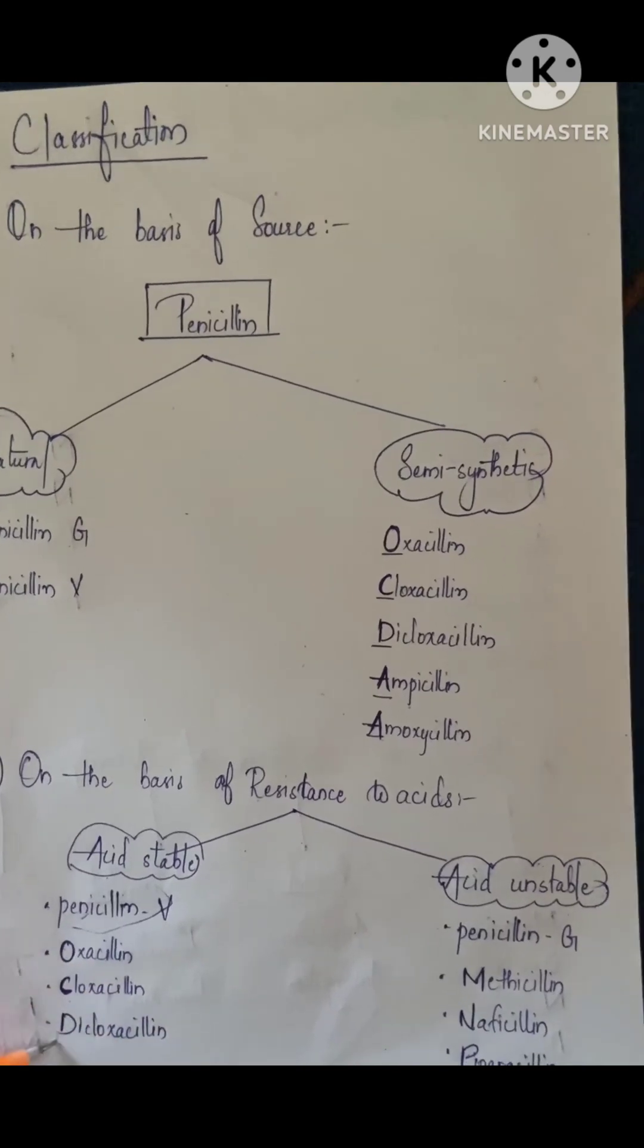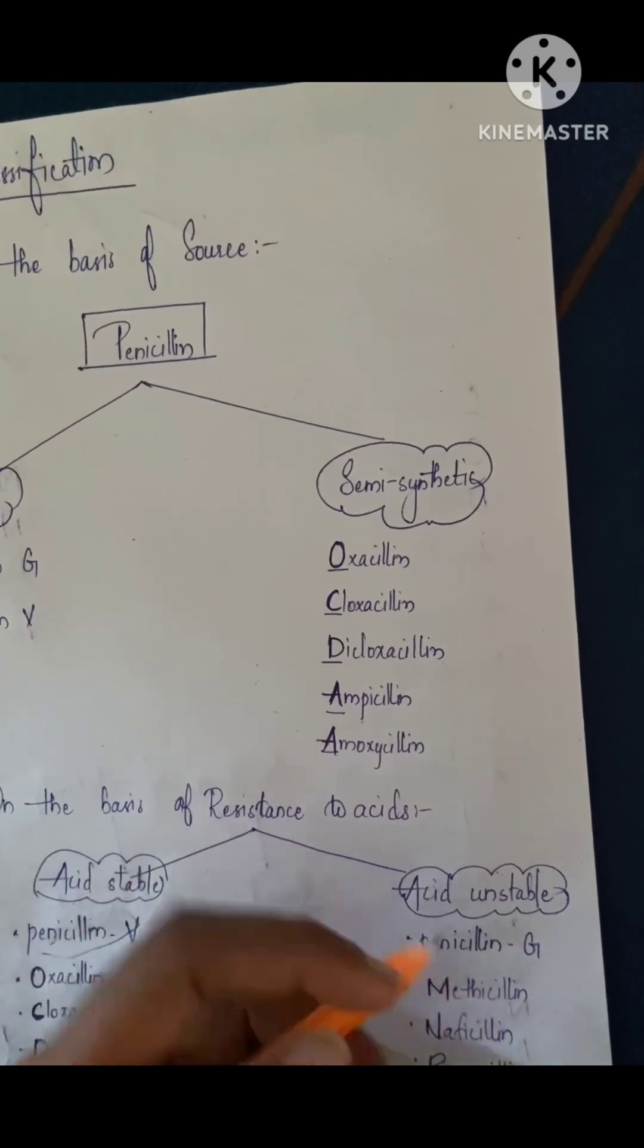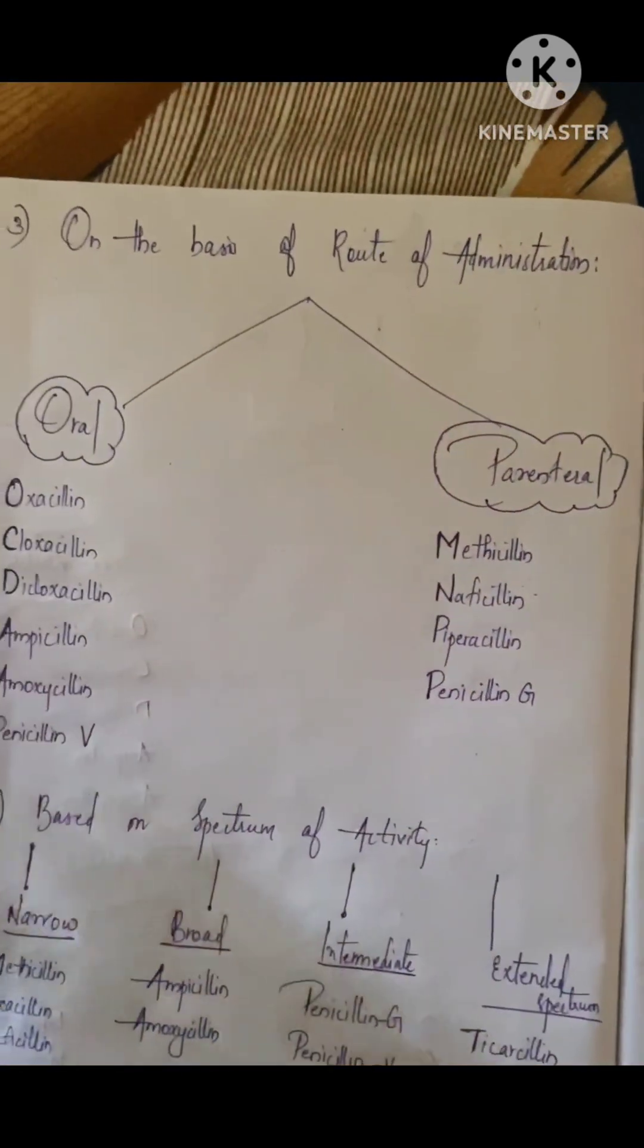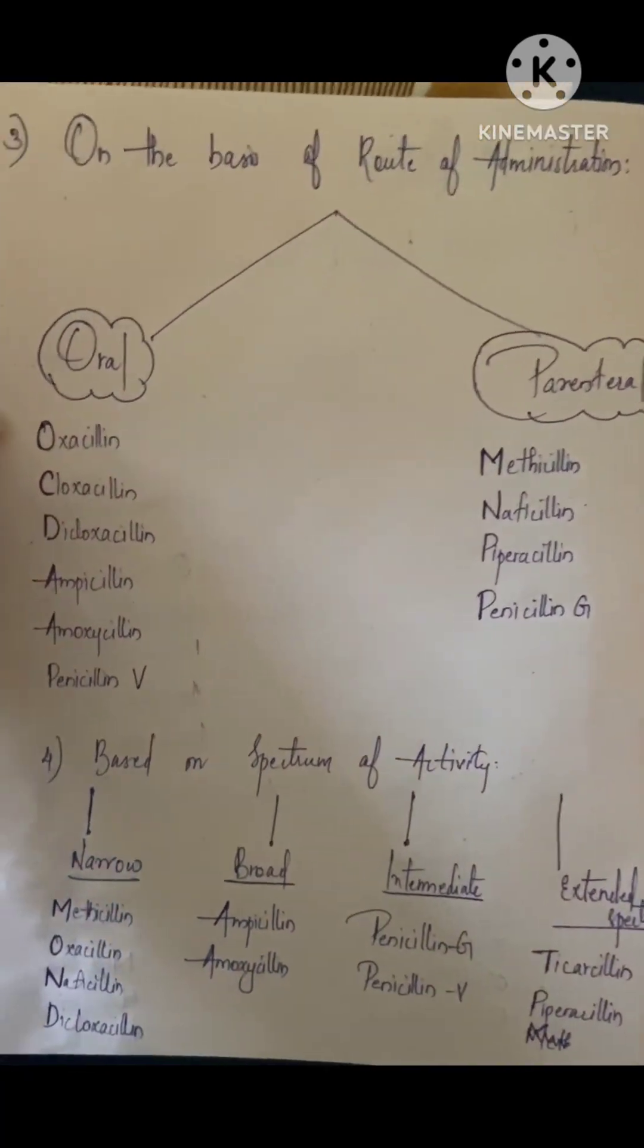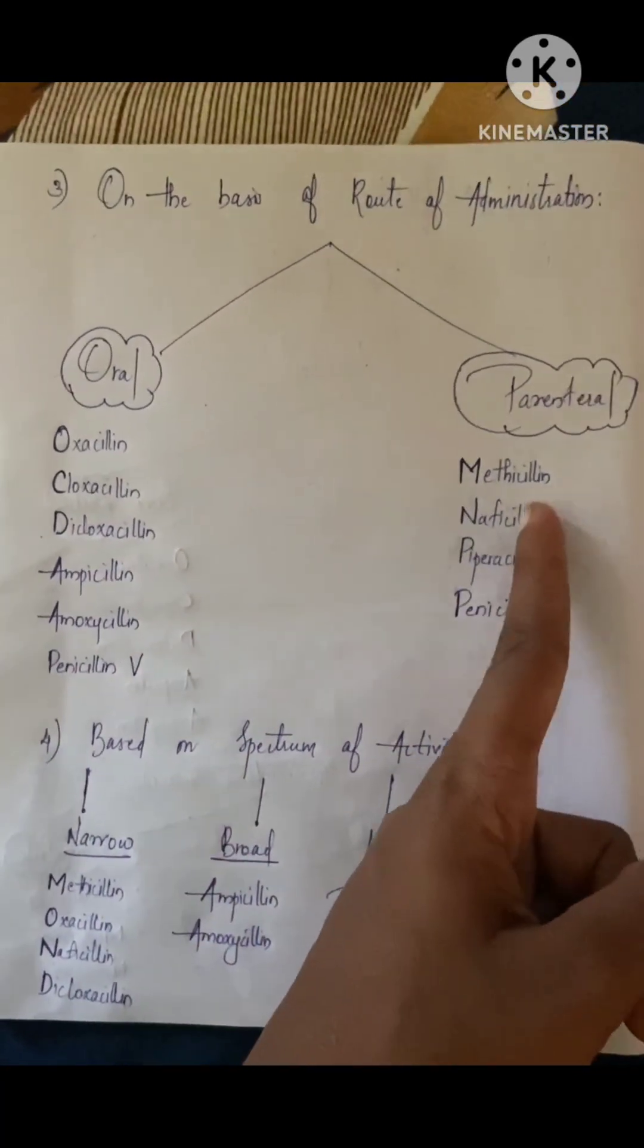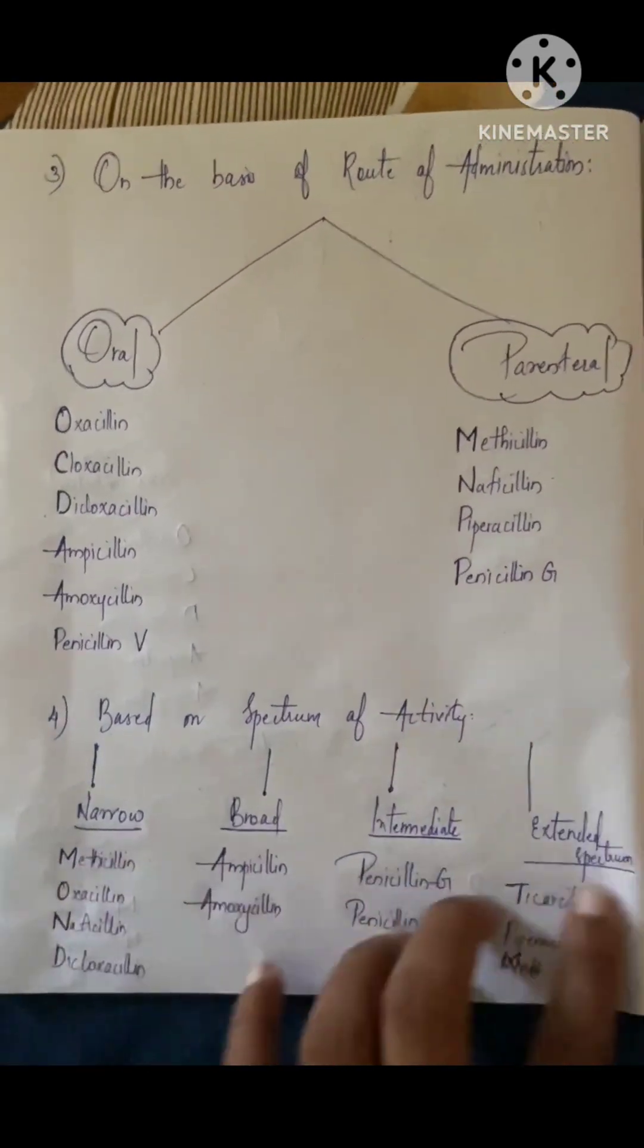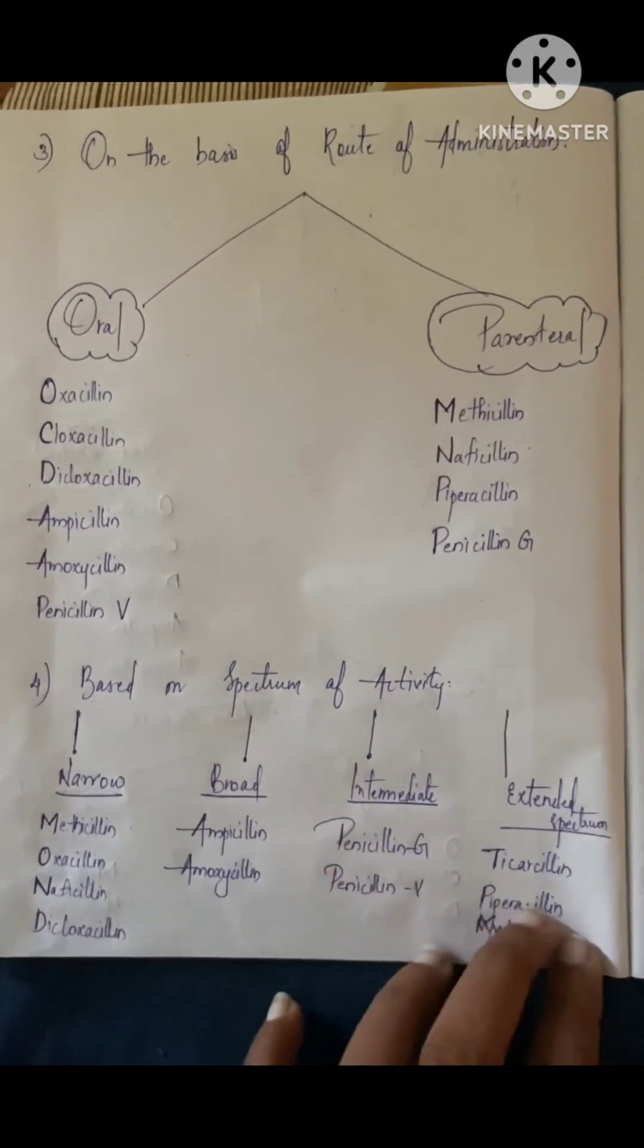Next classification is on the basis of route of administration. We know routes of administration include oral and parenteral. Oral includes OCDAA and penicillin V. Parenteral includes methicillin, nafcillin, piperacillin, and penicillin G.